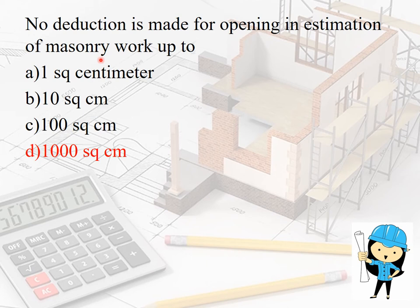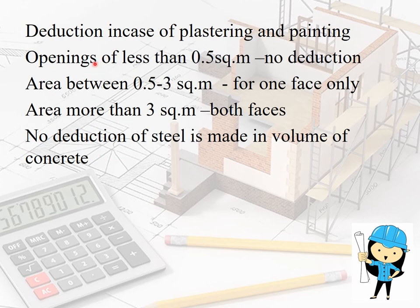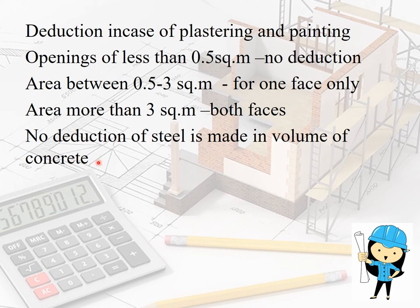No deduction is made for openings in masonry work up to 1000 cm². For beam, joist, or rafter, no deduction up to 500 cm². For plastering and painting, openings less than 0.5 m² have no deduction; area between 0.5 to 3 m² — only one face is deducted; area more than 3 m² — both faces are deducted. No deduction of steel is made in case of volume of concrete.